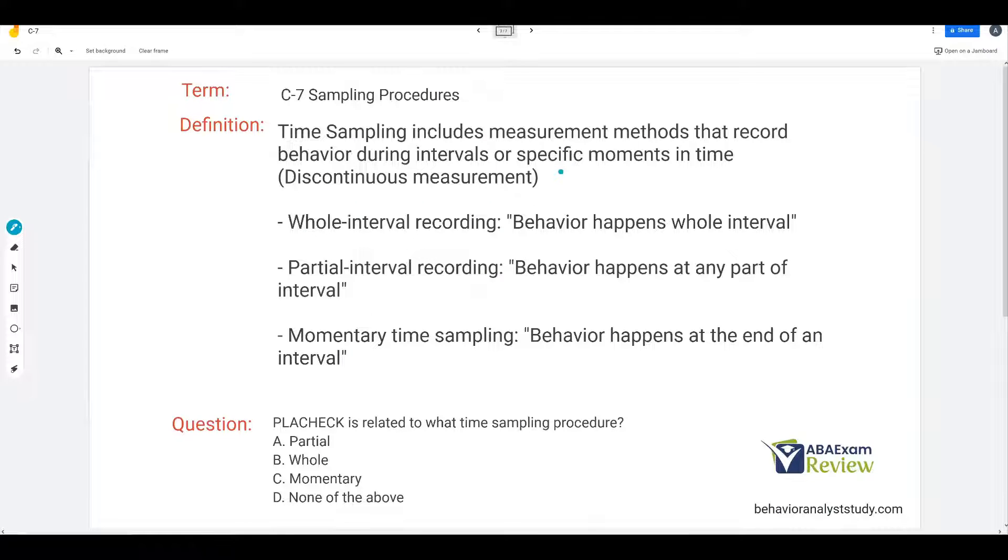Sampling procedures, otherwise known as discontinuous measurement. Time sampling includes measurement methods that record behavior during intervals or specific moments in time. For example, if I have a three-hour session, I might only take time sampling data for 20 minutes, and break that 20 minutes into intervals. We're not continuously taking measurements throughout the whole time. We're just taking a sample of that time and using intervals as our data collection timeframe.